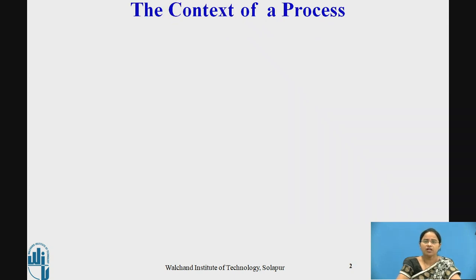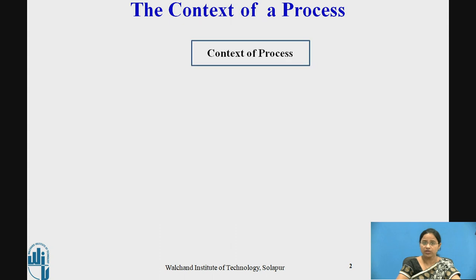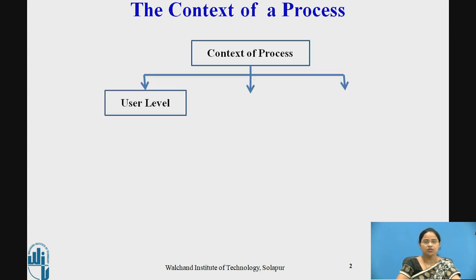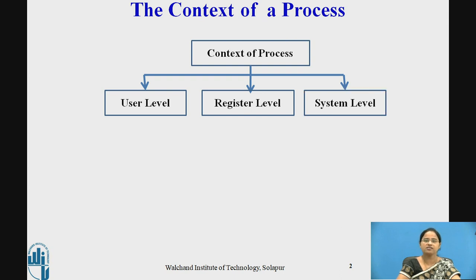What do you mean by context of a process? Context of a process means whenever a process executes, what it contains. Context of a process contains 3 parts: user level context, register level context, and system level context.